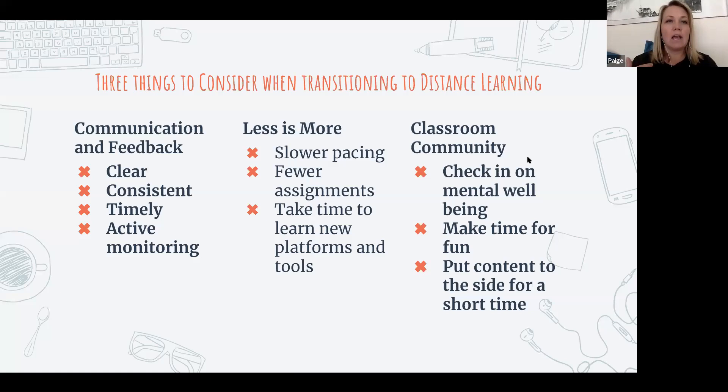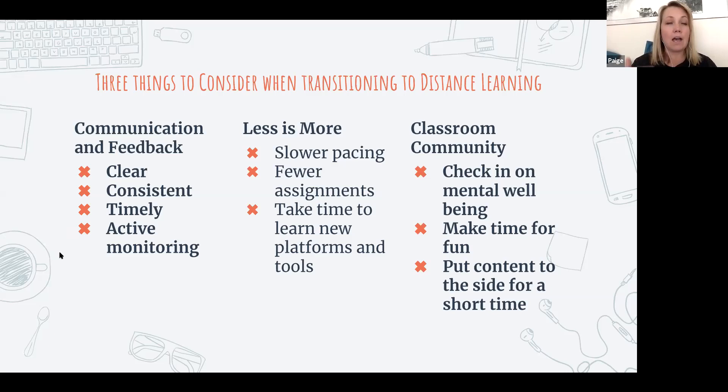The first thing is communication and feedback — it needs to be clear. Directions need to be transparent and consistent. Set up office hours for yourself and make sure you're checking your email at regularly scheduled times so you can support your students and give them the feedback they need. They need to hear from you. It needs to be timely, and you need to have active monitoring.